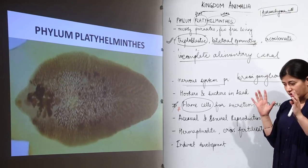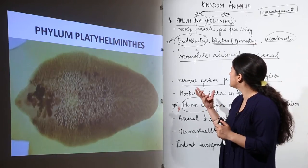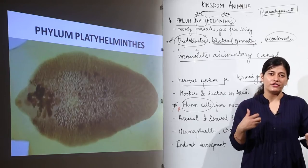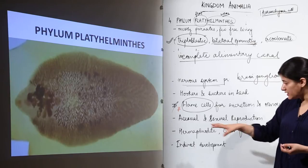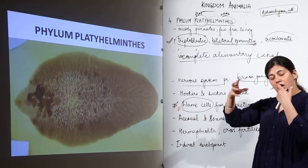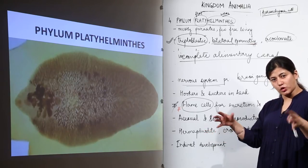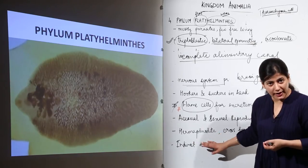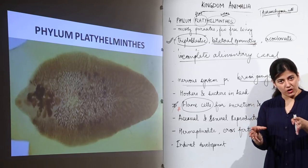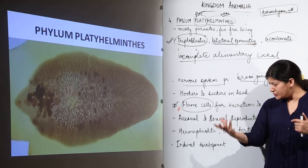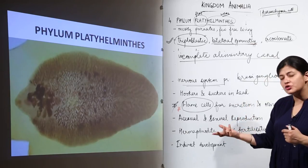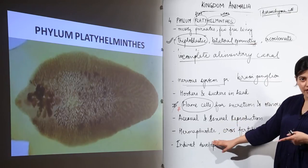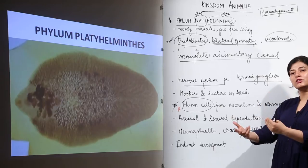They have both sexual and asexual reproduction and also show high regeneration capacity. For example, Planaria — if cut into three parts — regenerates into three organisms. This regeneration is a form of asexual reproduction. The organism can divide its body into any number of parts, each growing into a new organism. In sexual reproduction, the organism is hermaphrodite, with both male and female sex organs in the same individual.